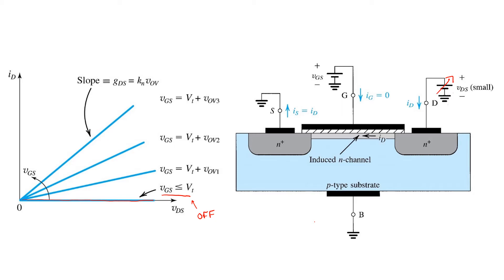As soon as VGS exceeds the threshold voltage, the curve will rise with a slope equal to GDS, one over the channel resistance RDS, whose expression we found on the last slide.